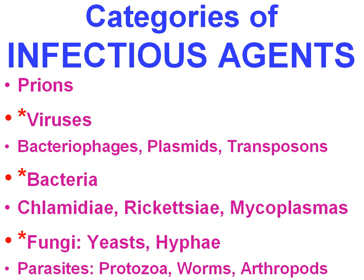We can move up or down the evolutionary tree. At the very lowest level, we have classes of infectious agents which don't even have DNA, and those are called prions. Most infections in humans are either viruses or bacteria, so those get the big asterisks. If you want to include fungi, we'll add a third asterisk. To be thorough, you move up the tree from prions to viruses — including bacteriophages, plasmids, and transposons, which infect other organisms like bacteria and don't directly affect humans — then to bacteria of various types, then obligate intracellular organisms like chlamydia, rickettsia, and mycoplasma.